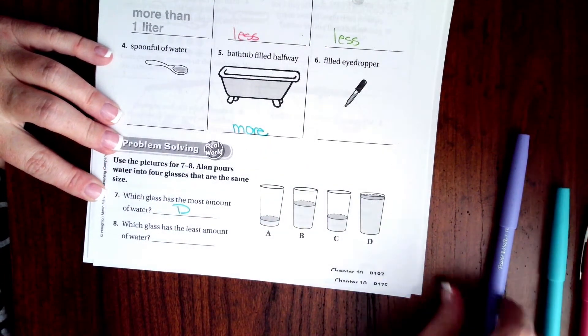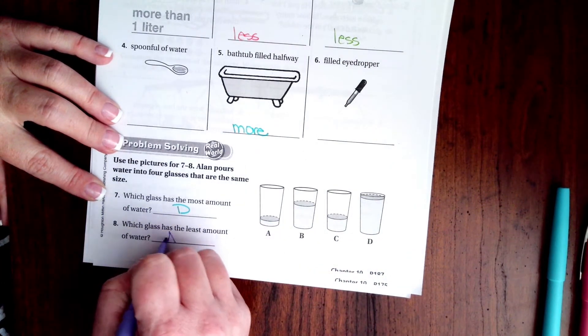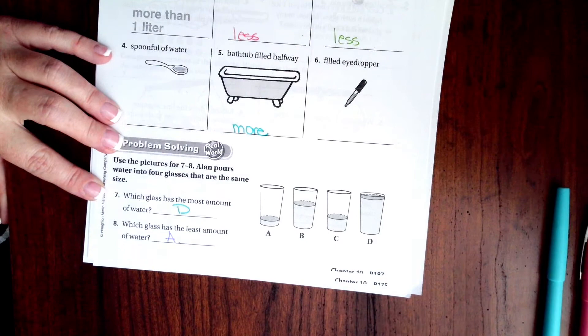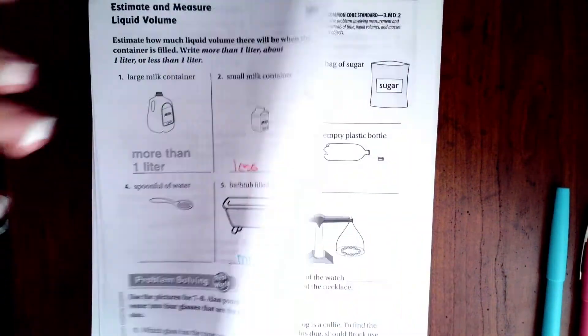Well, this one's filled up the most, so that's going to be D. Which glass has the least amount of water? This one's filled up the least, that's going to be A. Pretty easy guys, don't make it harder than it's got to be.